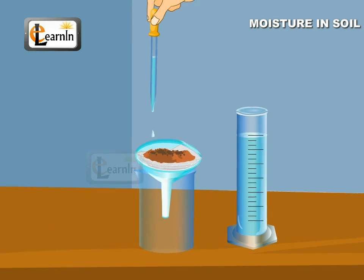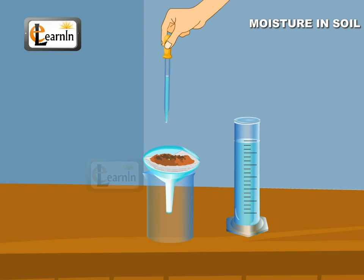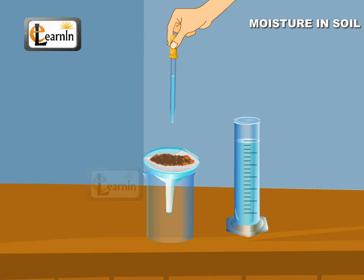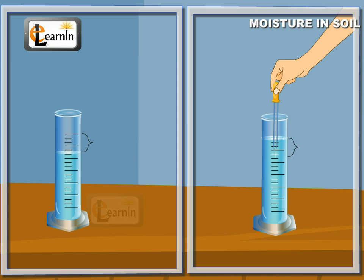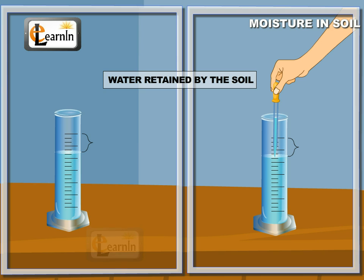Keep pouring till the water begins to drip from the funnel. Subtract the amount of water from the measuring cylinder with the amount you started with. This gives the water retained by the soil.